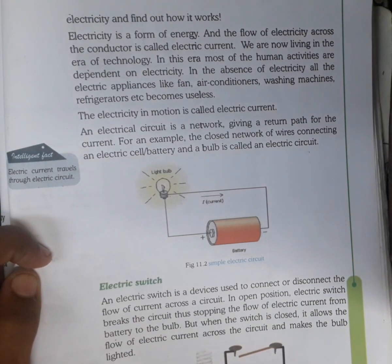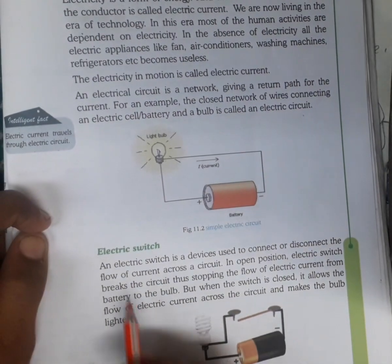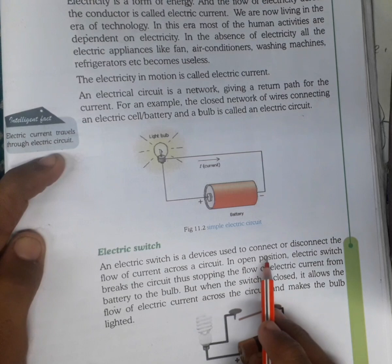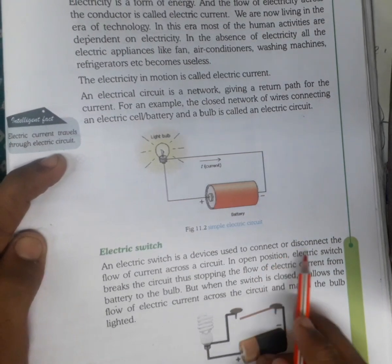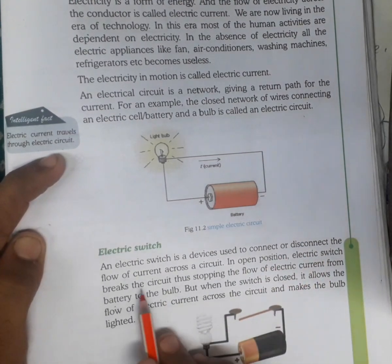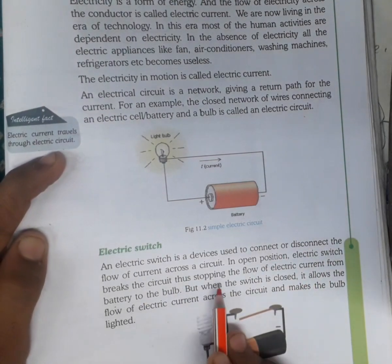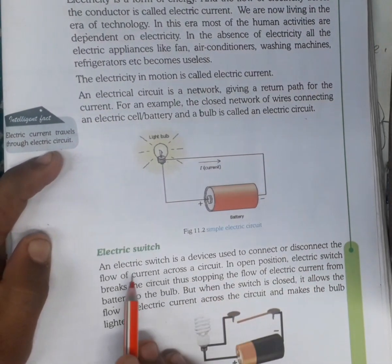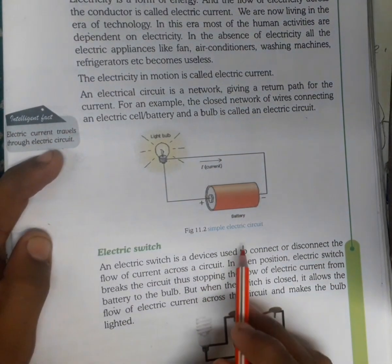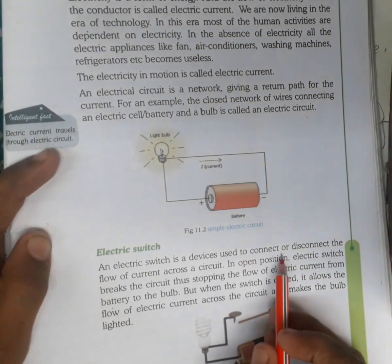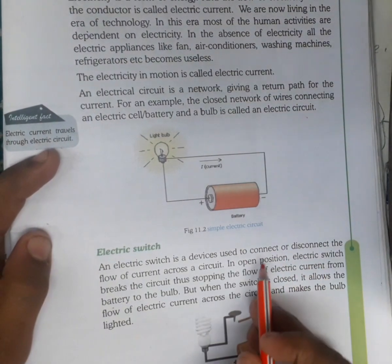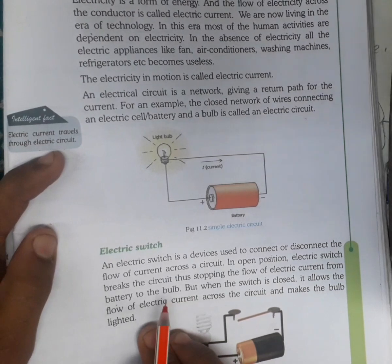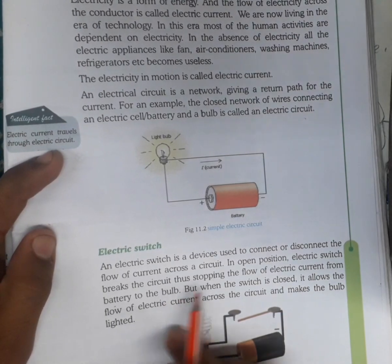An electric switch is a device used to connect or disconnect the flow of current across the circuit. Electric switch एक ऐसी device होती है जो circuit में current के flow को connect या disconnect करती है।